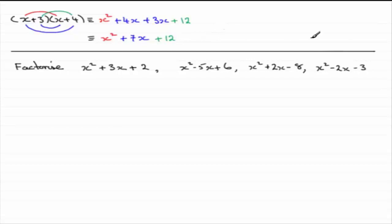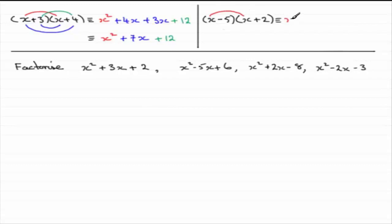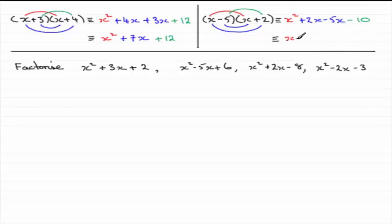Let me do one more expansion to illustrate further. Suppose we had different signs: x minus 5 multiplied by x plus 2. Again, x times x is x squared. Then x times plus 2 gives plus 2x. Minus 5 times x gives minus 5x. And finally, minus 5 times plus 2 is minus 10. Simplifying: x squared, and 2x minus 5x is minus 3x, and the constant on the end is minus 10.